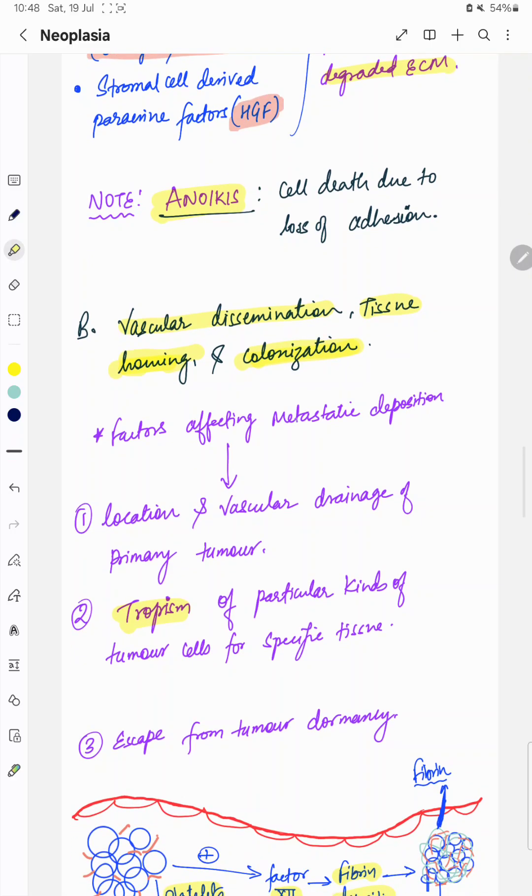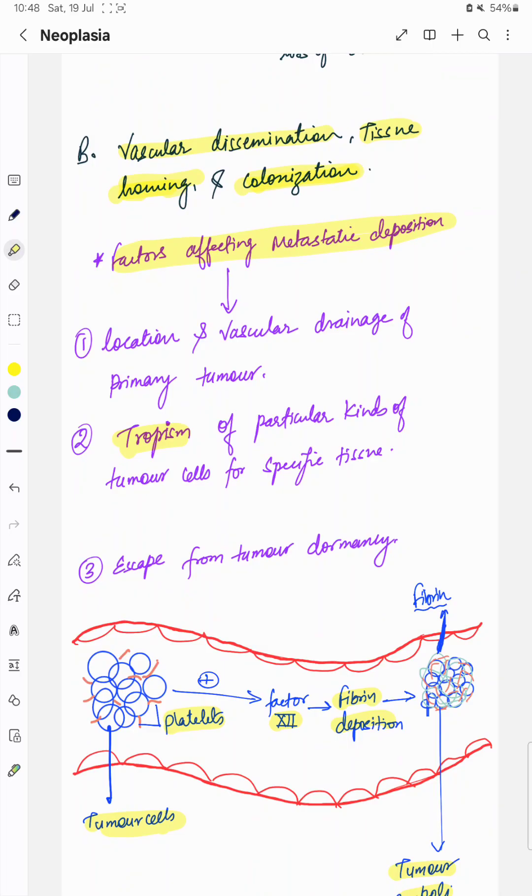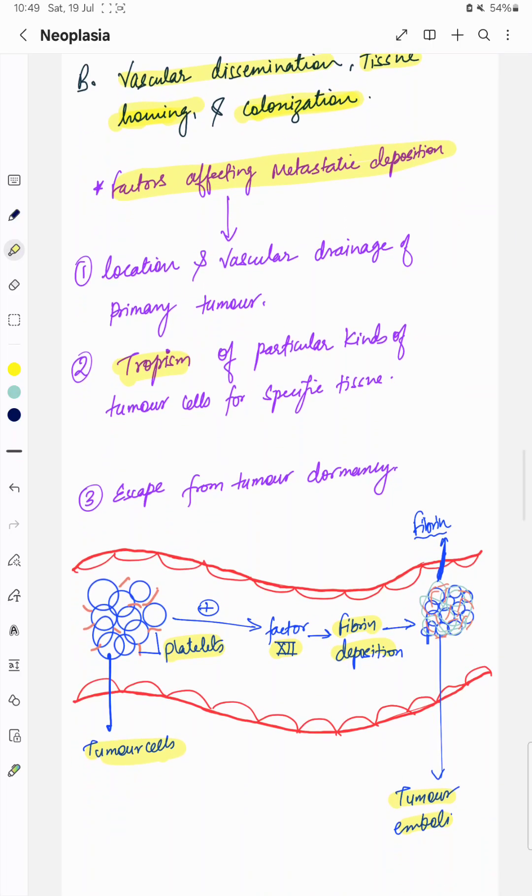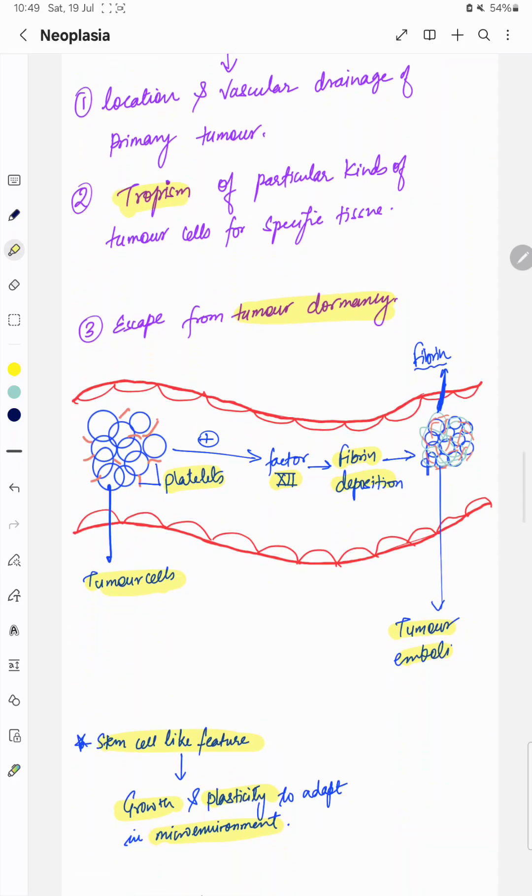What are the factors affecting metastatic deposition? First is location and vascular drainage of primary tumor. Second, tropism of particular kind of tumor cell for specific tissue. Third is escape from tumor dormancy. Normally, when cancer cells reach the vascular channel, they add platelets and along with the platelets they stimulate factor 12, which secretes or starts fibrin deposition and will result in formation of tumor emboli.